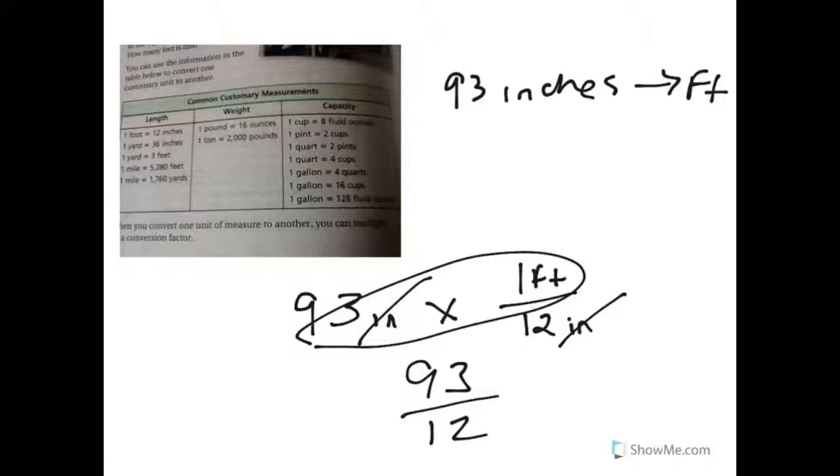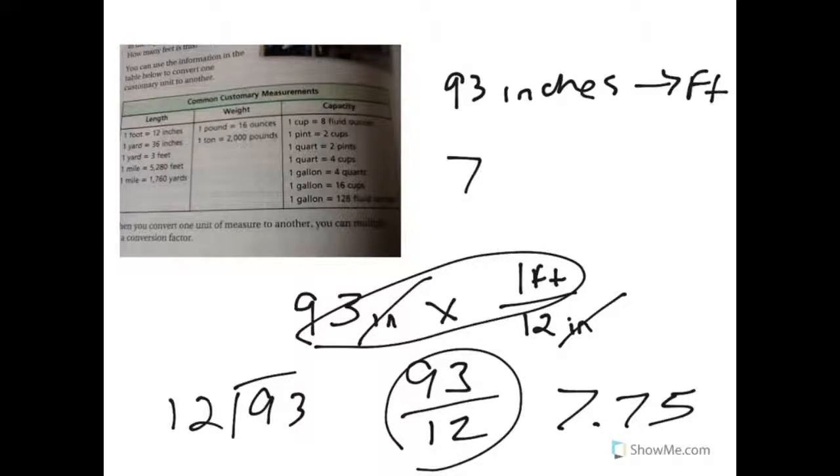So we have 93 divided by 12. I'm not gonna do the division here—I've done it on my calculator. We will do the division in class so you can see what it looks like. I just want to save a little bit of time on the video. 93 divided by 12 is gonna give you 7.75. So 93 inches equals 7.75 feet.